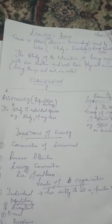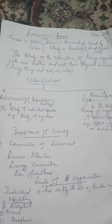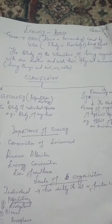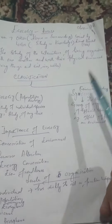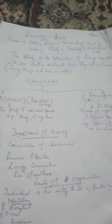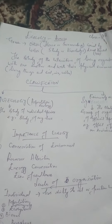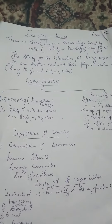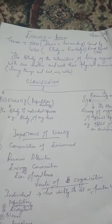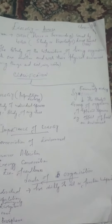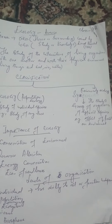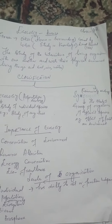Broadly, the word Ecology is classified into two main categories: Autecology, also called Population Ecology, and Cenecology, or Community Ecology. Autecology is the study of individual species — for example, the study of any tree. Cenecology is the study of a group of organisms of different species — for example, the effect of a forest on the environment.